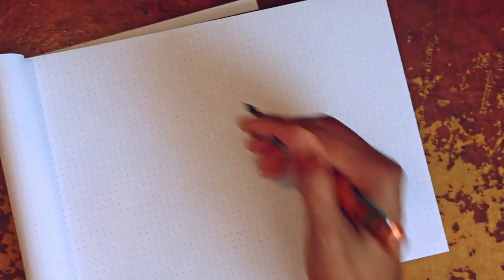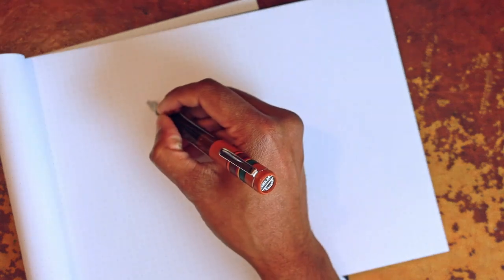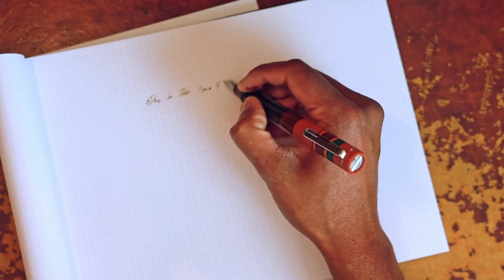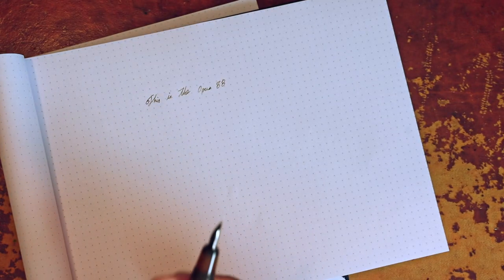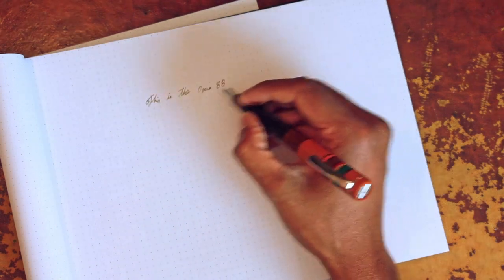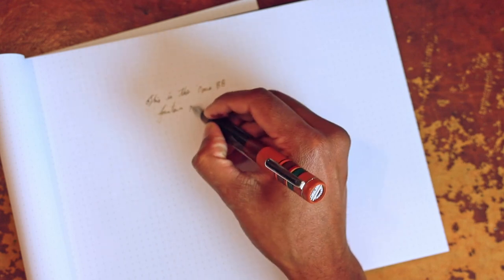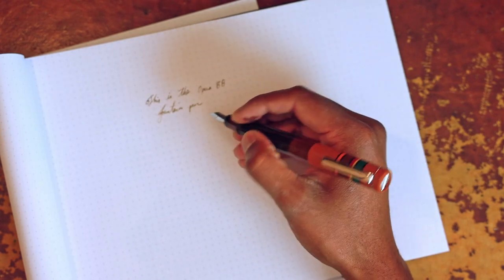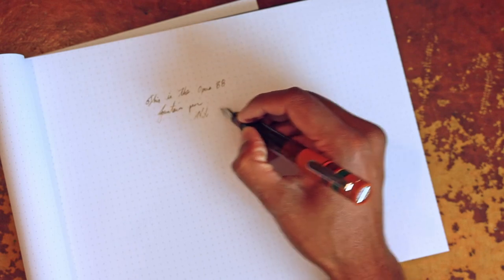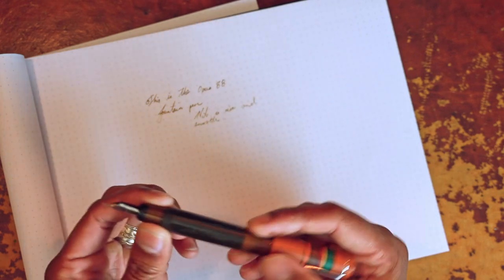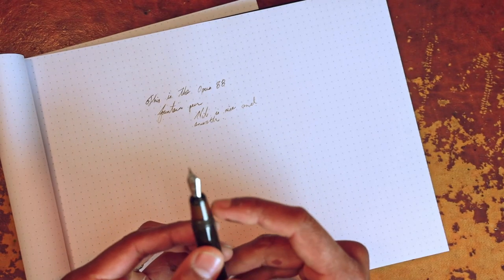So first impressions of the first write. Very exciting. I'm very excited about this. This is the Opus 88. This is the Opus 88 fountain pen. And it's just beautiful. Flows evenly. The nib is nice and smooth. And the pen is really good to write with. Right off the bat, you'll notice that the grip section is incredibly short, like hardly anything there. And then it's got threads.